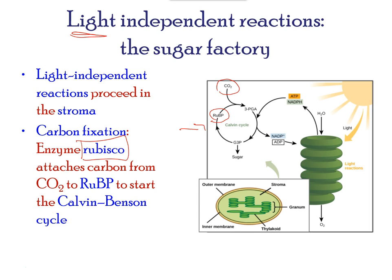As seen from the cycle, ATP, hydrogen, and electron products from the light-dependent reactions are used within the cycle. The glucose molecules can then be stored as starch, cellulose, or sucrose.